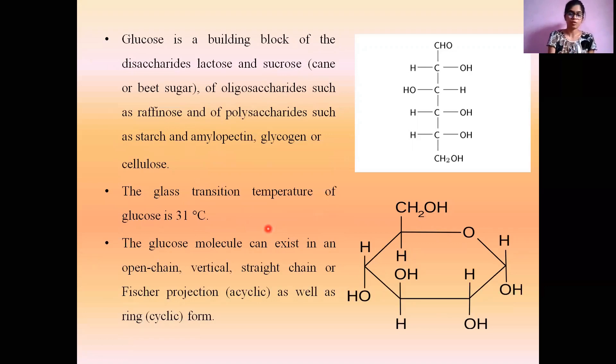The temperature required for a food material to undergo a phase change from a glassy amorphous to a rubbery state is the glass transition temperature. Glucose can exist in an open chain, vertical straight chain or Fischer projection, and all these structures come as an acyclic structure, as well as the ring form which comes under the cyclic structure. The right top image depicts the acyclic or straight chain structure of glucose, whereas the bottom image represents the ring or cyclic structure.